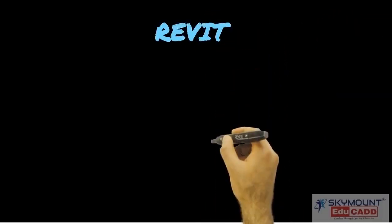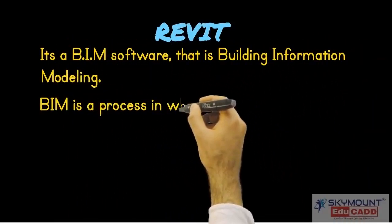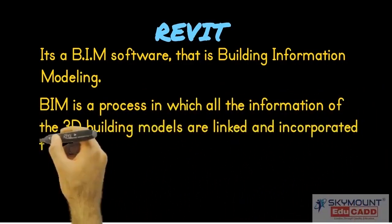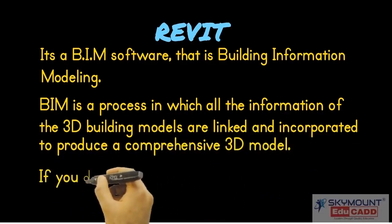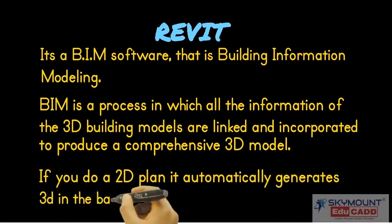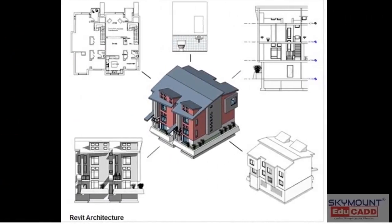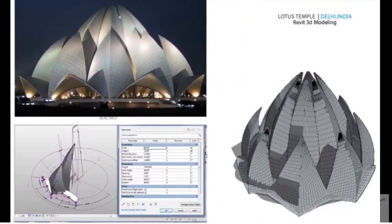Revit is a BIM software — that is, building information modeling. BIM is a process in which all the information of the 3D building models are linked and incorporated to produce a comprehensive 3D model. If you do a 2D plan, it automatically generates 3D. From a single plan we get a 3D model, section, and elevation. In Revit, using the concept called massing, you can make a regular structure.